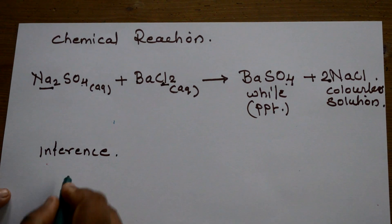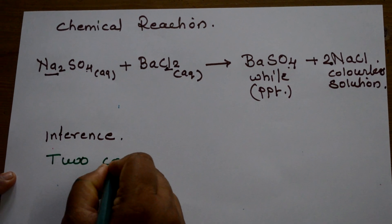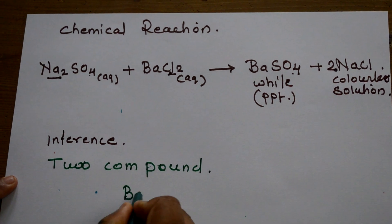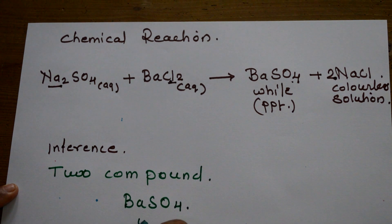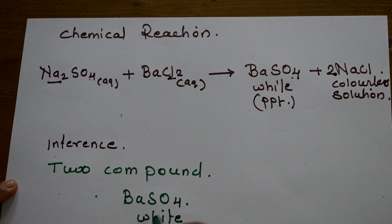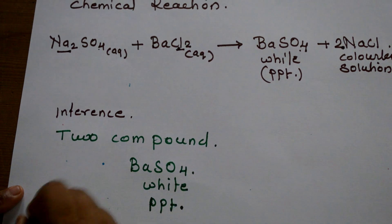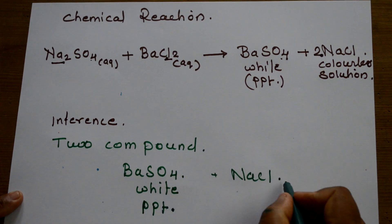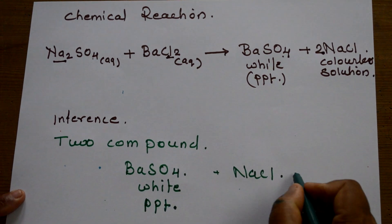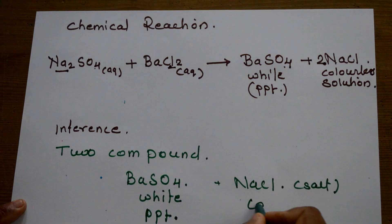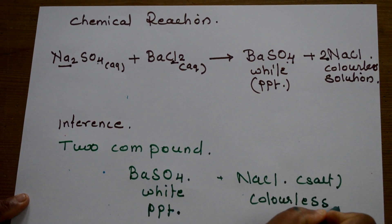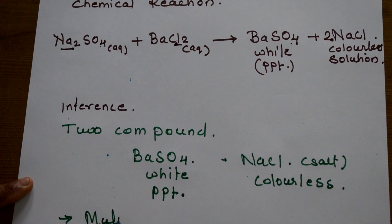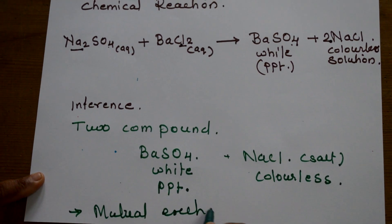Inference: we got 2 compounds. One is barium sulphate in the form of white PPT, and another one is NaCl, sodium chloride salt, colourless. This formation is due to mutual exchange of ions.